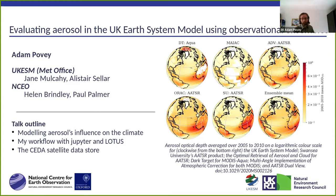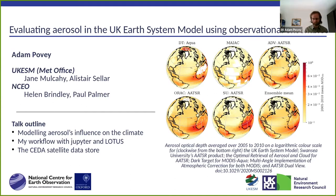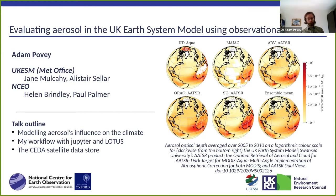I'm working on trying to evaluate aerosols within the UK Earth System Model using an observational ensemble. What does that mean? Well, the image here shows there are a few different ways of measuring aerosols in the atmosphere, and there's a model which is throwing out a value, and I want to work out: is the model sensible given what we've measured?